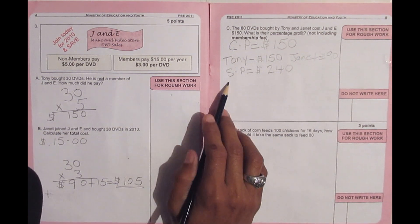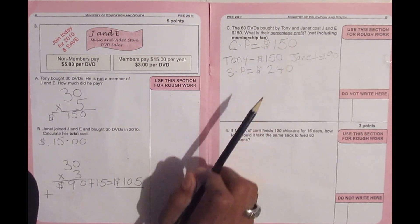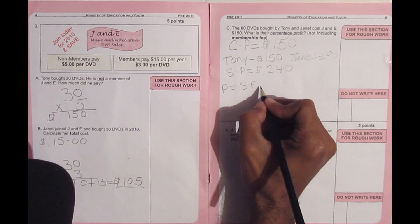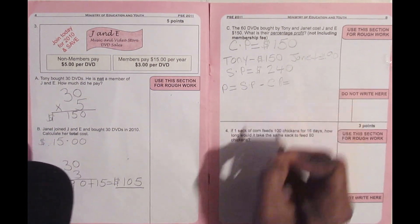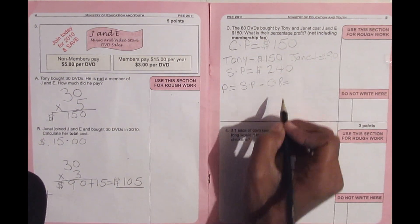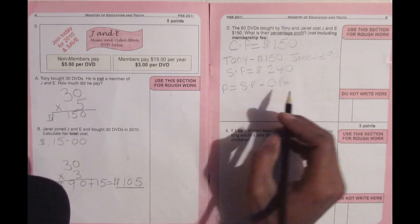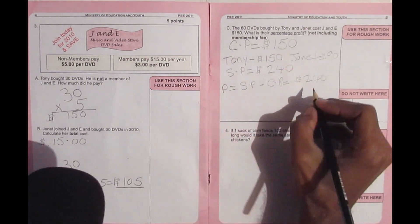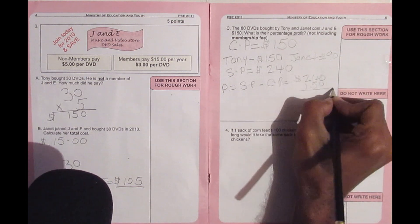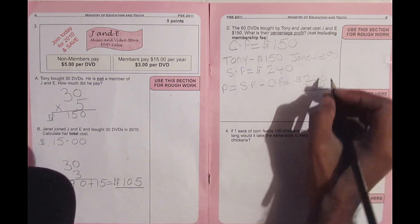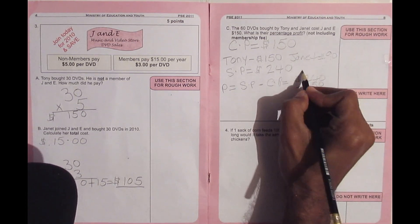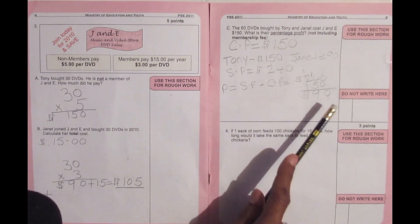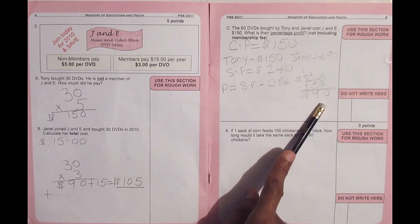To find the percentage profit, we first need to find the profit. Profit equals sales price minus cost price. The company sold the DVDs for $240 and purchased them for $150. $240 minus $150 equals $90. So the company made $90 profit.